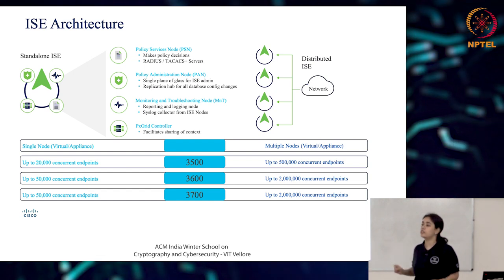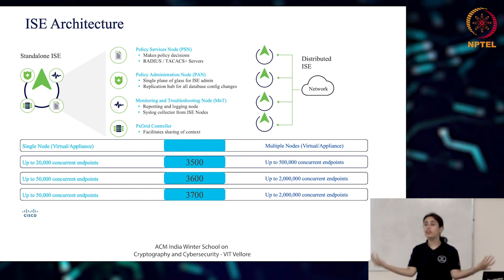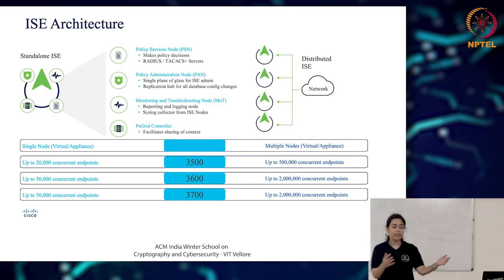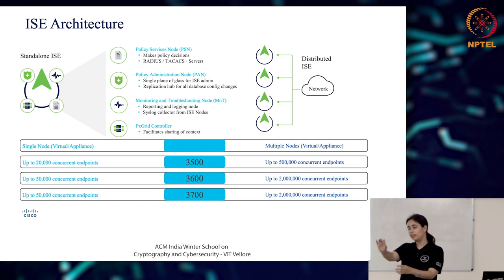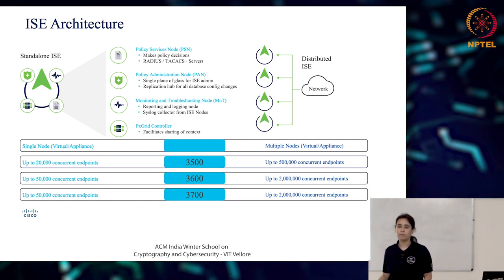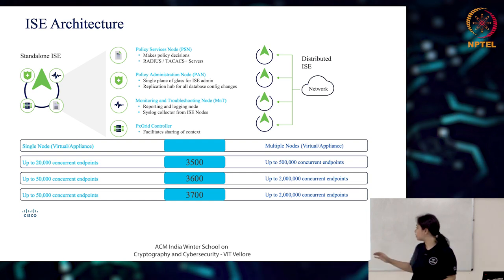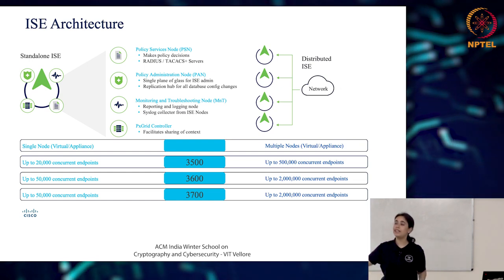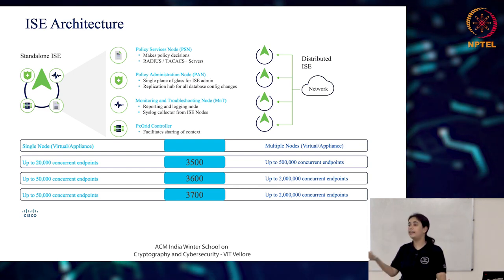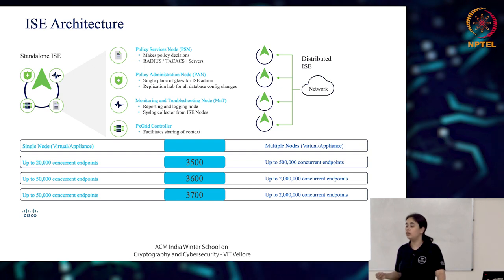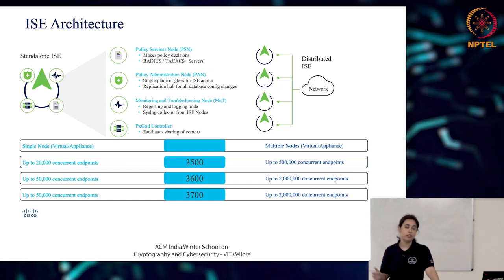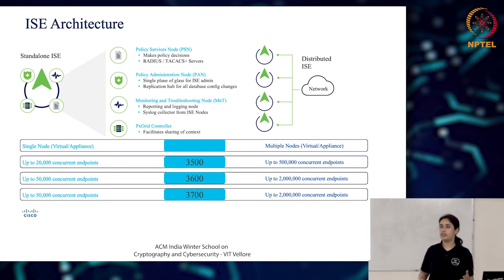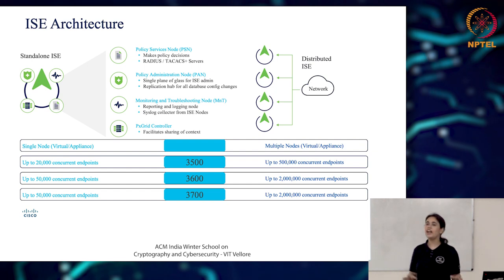Next is the Policy Services Node, or PSN. These are the workers — the employees. The PAN tells them the rules: authentication rules, authorization rules. The PSN goes and applies those rules. In reality, the switches, routers, and other network devices are communicating with the PSN. Whatever policy is being applied and executed is done through the PSN. These are the actual RADIUS and TACACS servers that make policy decisions — accept, deny, change of authorization — all handled by the PSN.